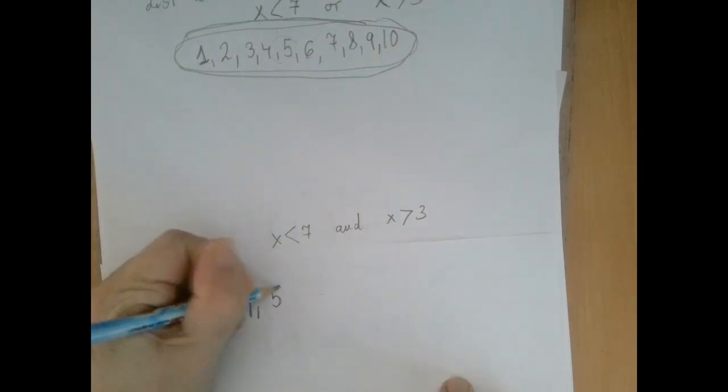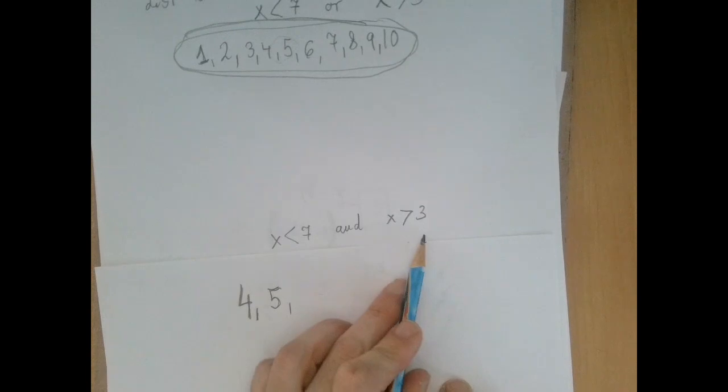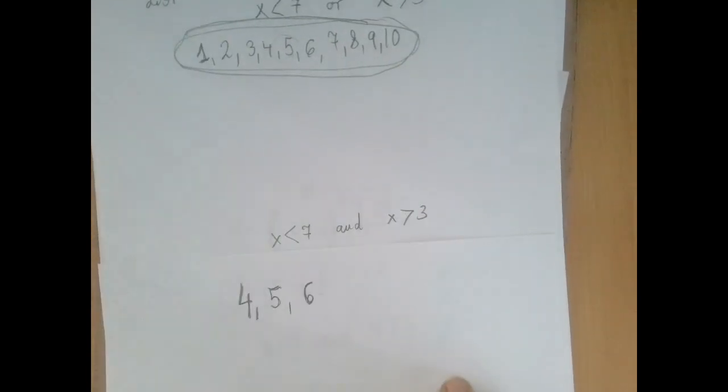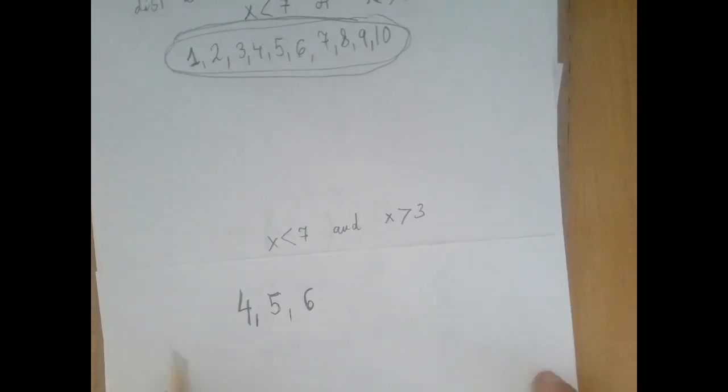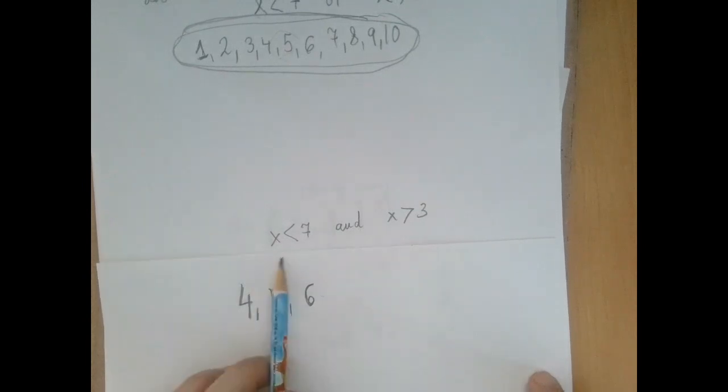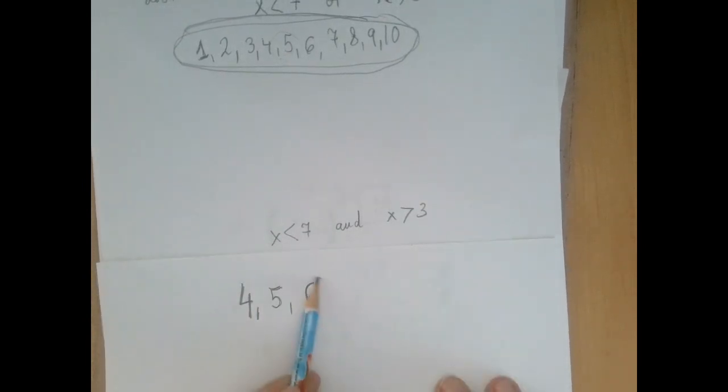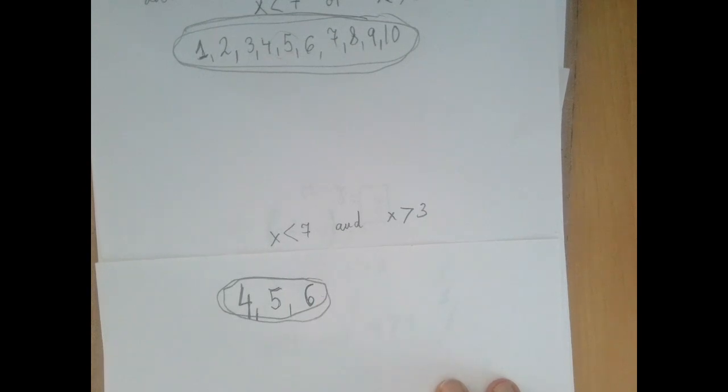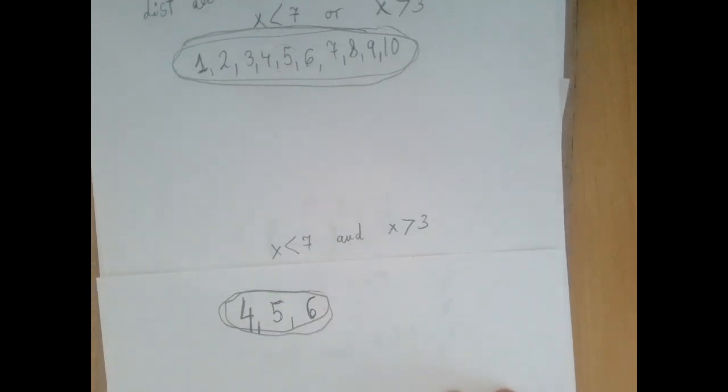So this property will be true for 5 because 5 is also less than 7 and greater than 3. Both are true. Same with 6, 6 is less than 7, 6 is greater than 3, and then that's it. Because from now on, 7, 8, and 9, and 10 will not be less than 7. So the list for the second problem is quite smaller. 4, 5, and 6.